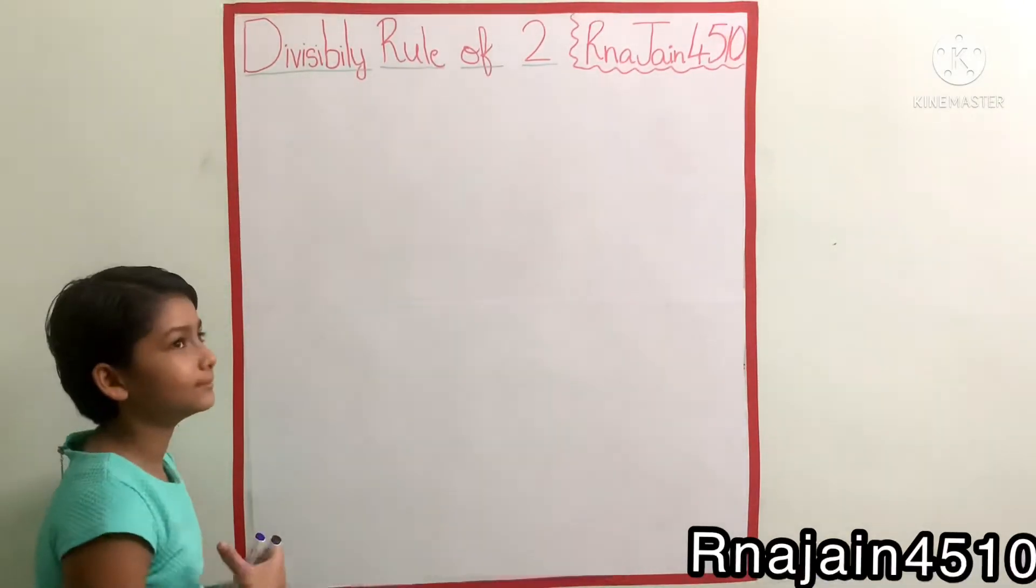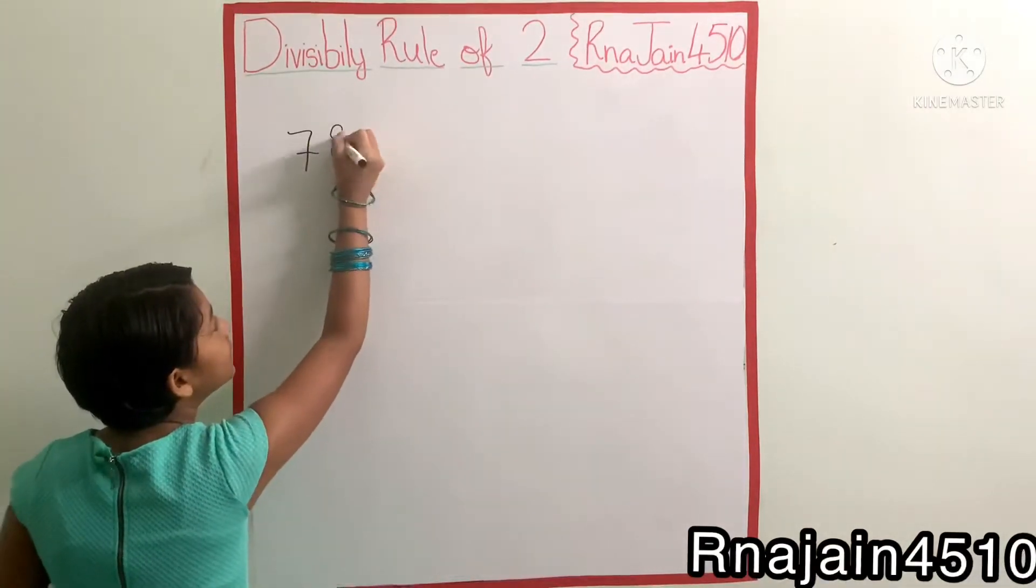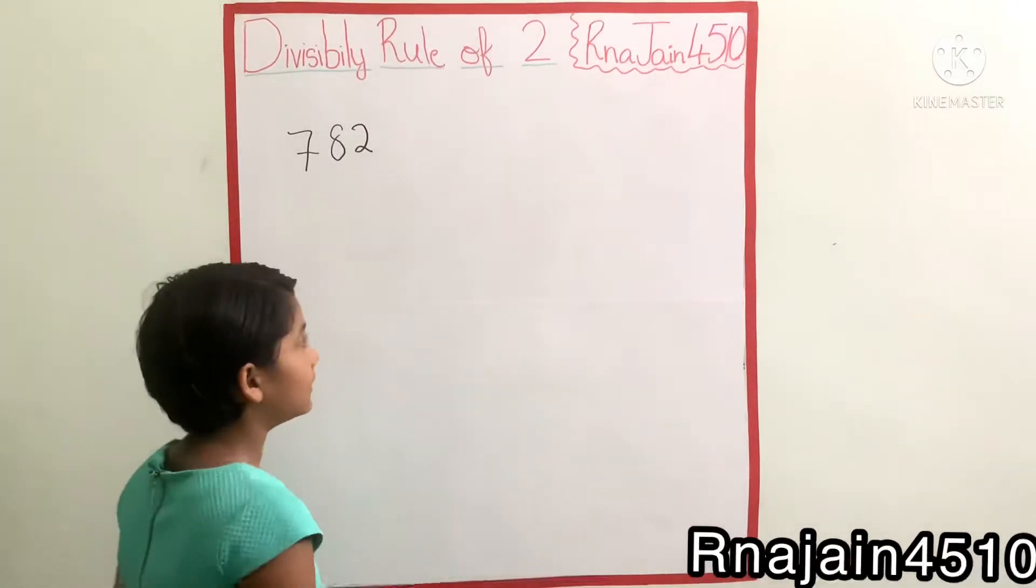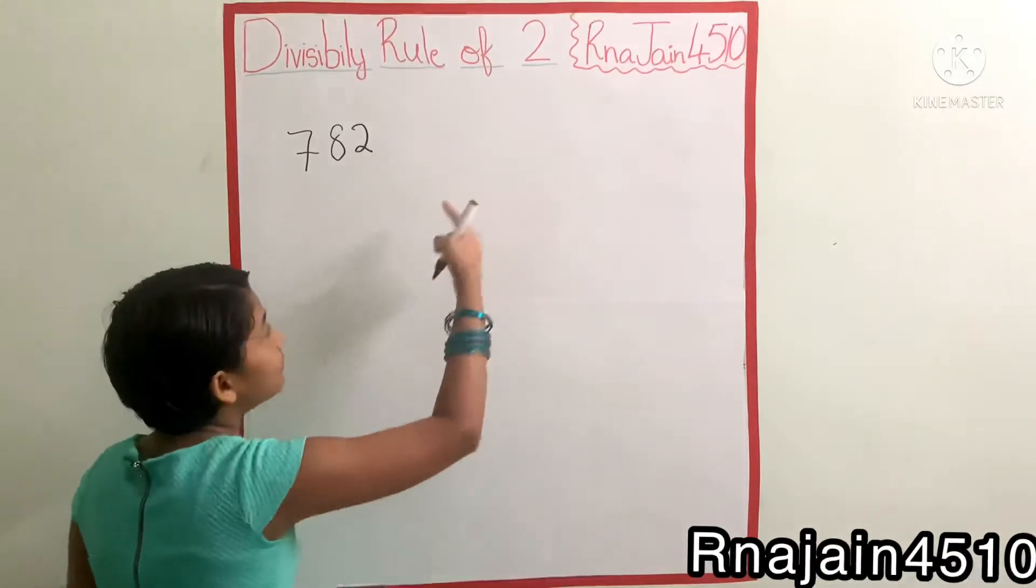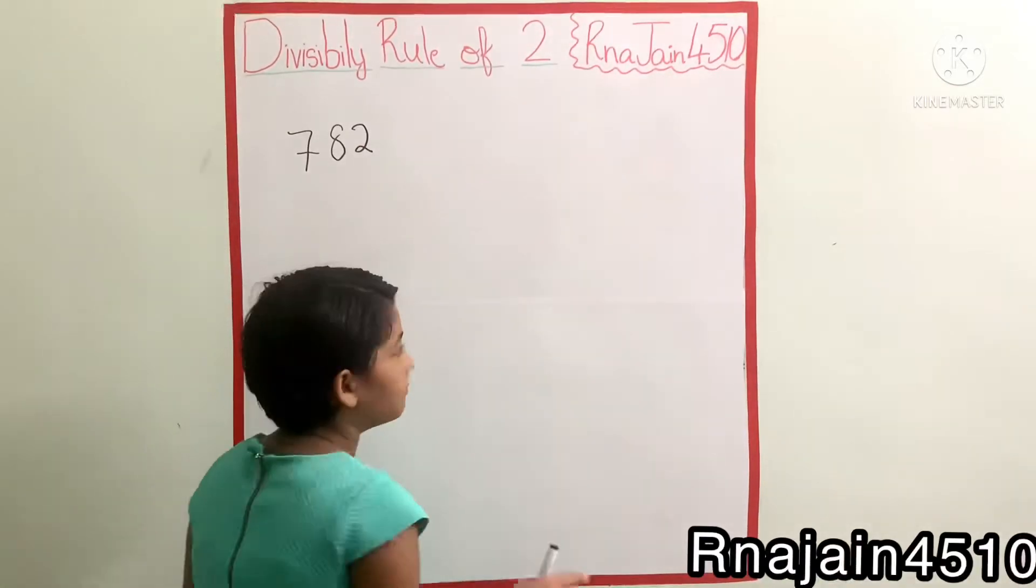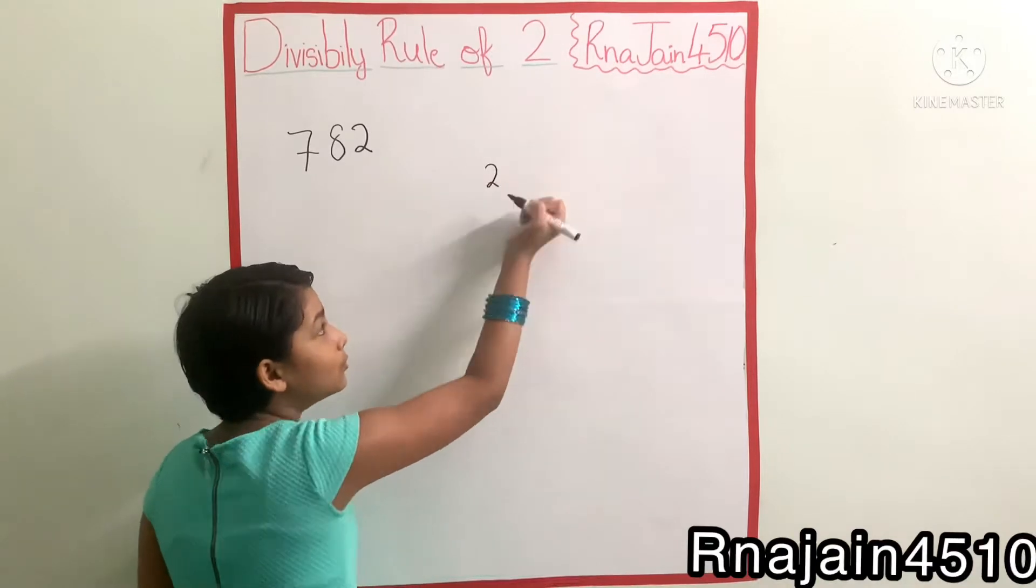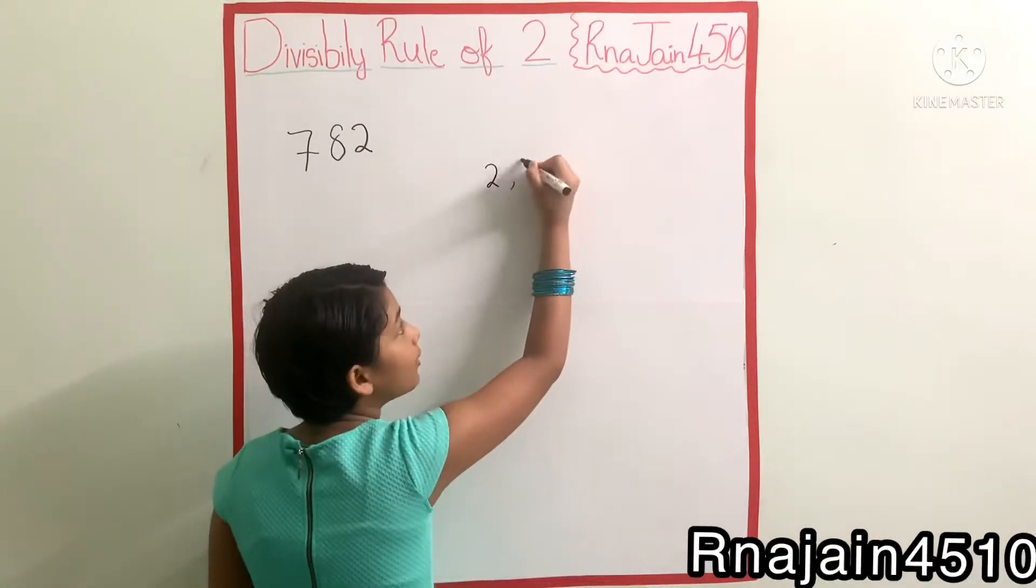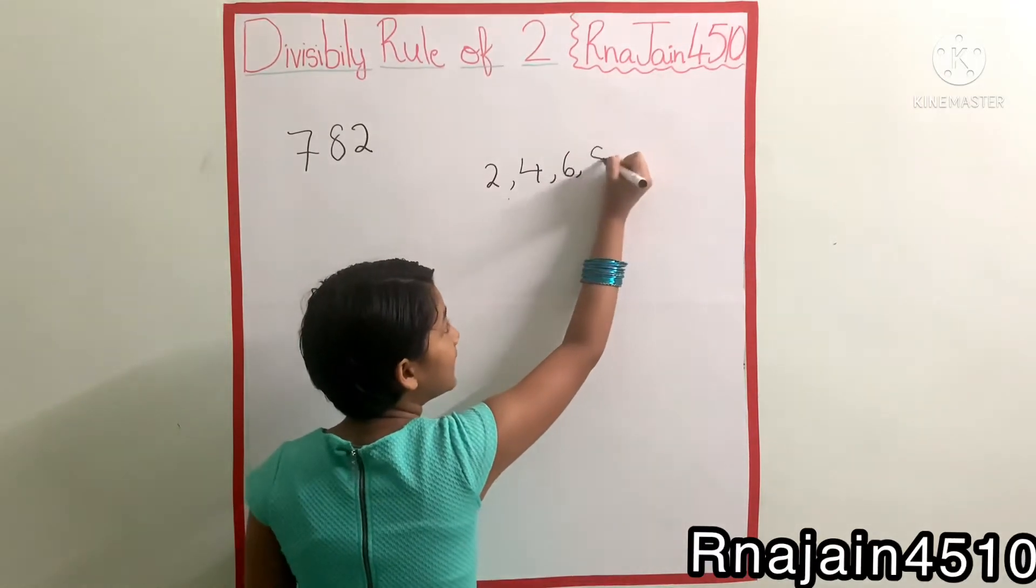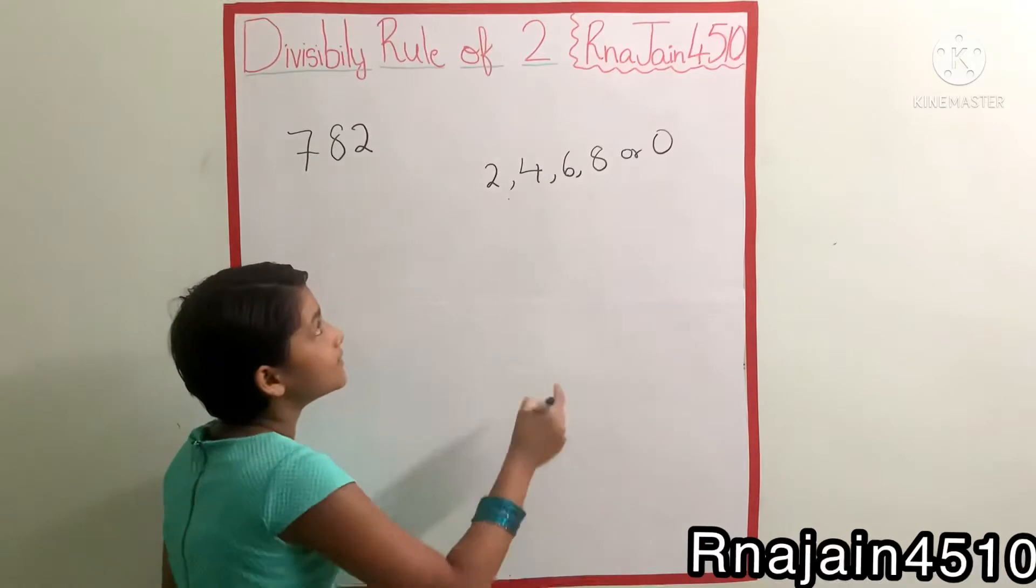And our first question will be 782. So is this divisible by two or not? So the rule of divisibility rule of two is that whichever number is ending with 2, 4, 6, 8, or 0 are divisible by two.